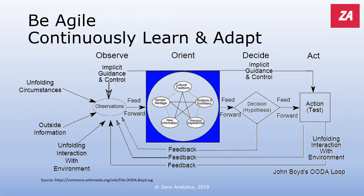We need to be agile — to continuously learn and adapt. In this slide you see the OODA loop: Observe, Orient, Decide, and Act — a loop that John Boyd developed based on the decision making process of fighter pilots. In business it is the same: we need to continuously observe what is happening in the market and in our organization, orient where we are and where we need to go, make decisions, and act. Those actions affect the environment, so we need feedback loops at every moment to observe again what is happening.